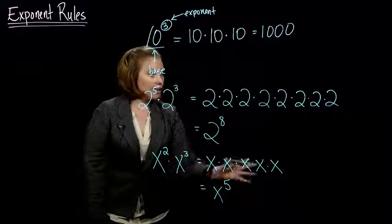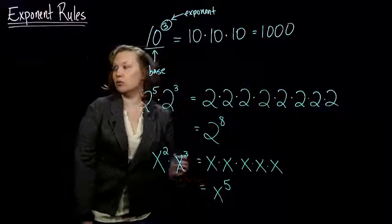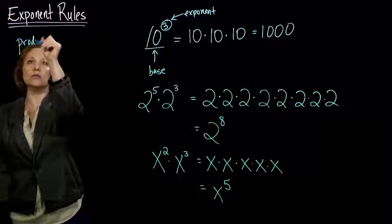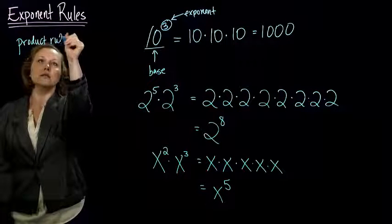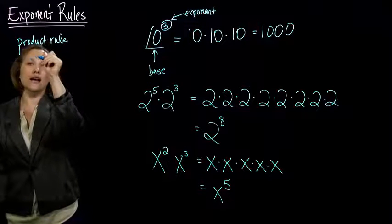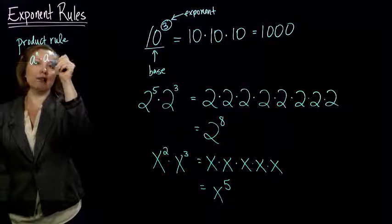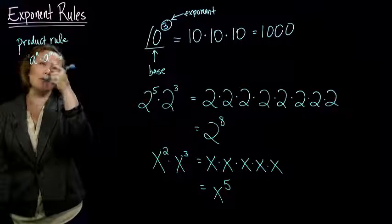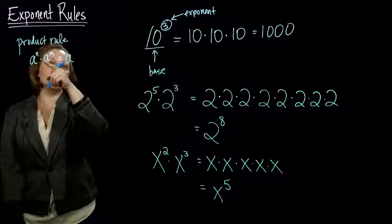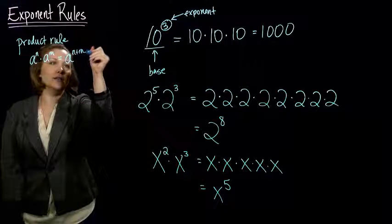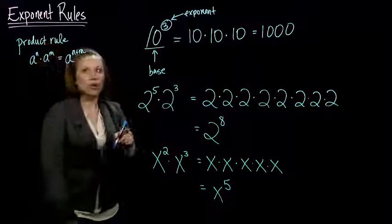So, this is actually what we call the product rule for exponents. The product rule says if I have any number to a power times another number or the same number to a different power, or it could be the same power, I take that number, I can get the answer by taking that number and raising it to the powers added together.